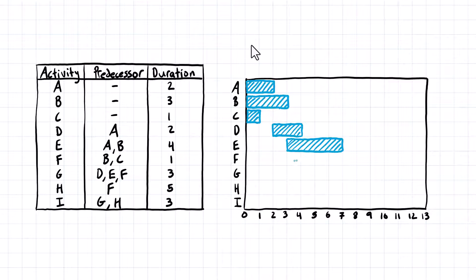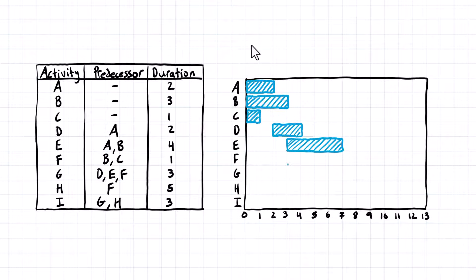The same logic applies to activity F. F depends on B and C, so it can't start until both are finished, and it has a duration of one day. B finishes at the end of the third day, and C finishes at the end of the first day. So F has to start after the end of the third day — at the beginning of the fourth day — and it's just one day long.